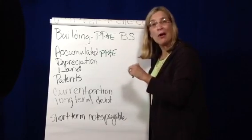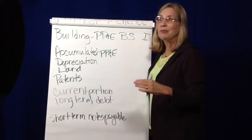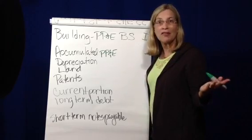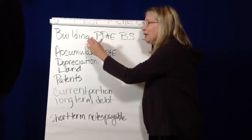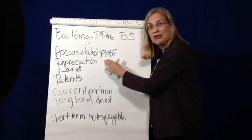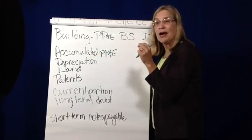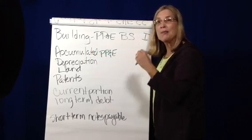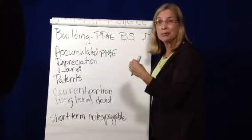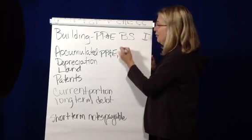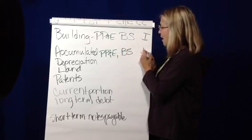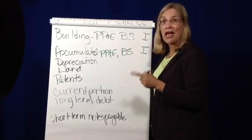Now, the book value has nothing to do with what the real estate market says that building is worth. So all that building minus accumulated depreciation shows is, from a usage standpoint, how much life or cost is left to depreciate. So because it's property, plant, and equipment, it shows up on the balance sheet, and it's an investing activity.